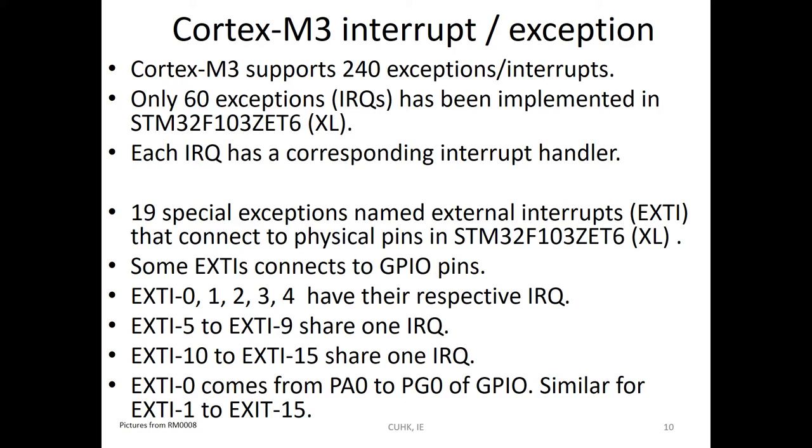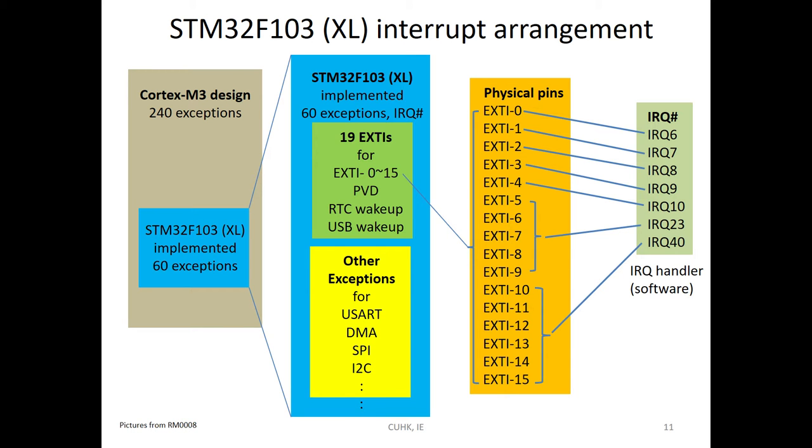External interrupt in the M3. M3 supports 240 exceptions or interrupts. Only 60 is implemented on this model. Each interrupt with a handler called IRQ. And only 19 external interrupts in this CPU, and will connect to the GPIO pins. Some have individual IRQ and some share one IRQ.